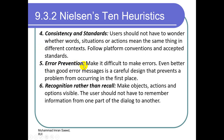Number five: error prevention. We must not allow the user to make mistakes. We must include validation checks and try to ensure the user cannot make errors — make it difficult to make errors. Even better than good error messages is a careful design that prevents a problem from occurring in the first place. If I tell the user through a dialog box what they need to enter, the format and type of data, it will help them enter correct data without making mistakes.